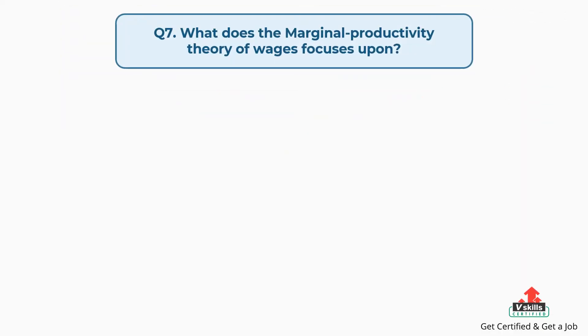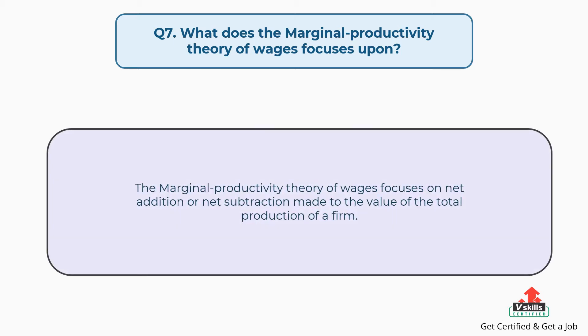Question number seven: What does the marginal productivity theory of wages focus upon? The answer is, the marginal productivity theory of wages focuses on the net addition or net subtraction made to the value of the total production of a firm.